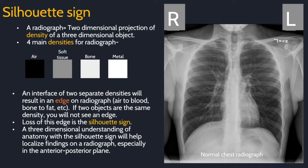As it is a projectional image, an interface of two separate densities will result in an edge. For example, the diaphragm next to fat, an aerated lung next to a diaphragm, a pulmonary artery, and the heart borders.